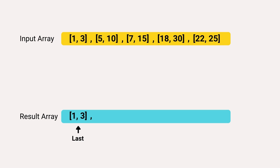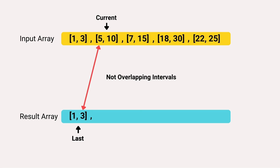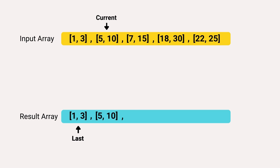We will start iterating through the interval array from the second interval at index 1 — let's call this the current interval. In the first iteration, the start time of the current interval is greater than the end time of the last interval, indicating the intervals are not overlapping and hence we will not merge them. So we add the current interval into the result array.